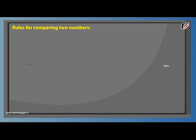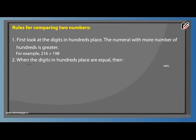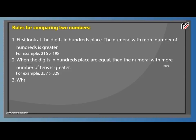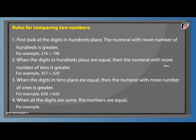Rules for comparing two numbers: first, look at the digits in the hundreds place — the numeral with more hundreds is greater. For example, 216 is greater than 198. When the hundreds digits are equal, the numeral with more tens is greater; for example, 357 is greater than 329. When the tens digits are equal, the numeral with more ones is greater; for example, 639 is greater than 635. When all the digits are the same, the numbers are equal; for example, 419 equals 419.